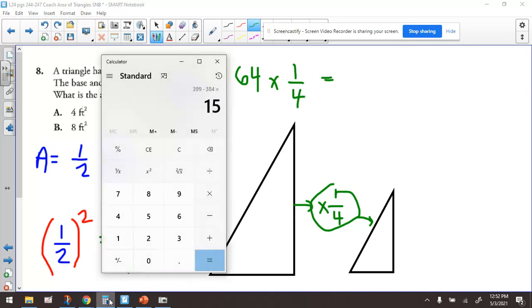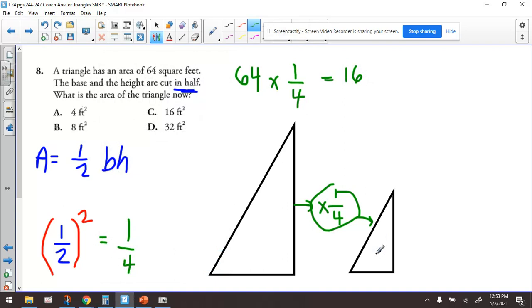So let's take out our calculators. Remember, taking one-fourth of something is the same as dividing it by four. So if we do 64 and we divide that by four, we get 16. So the smaller one should be 16. If the area of the bigger one is 64, one-fourth of 64 is 16.